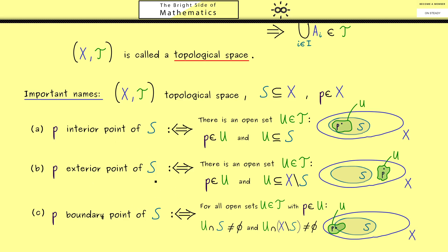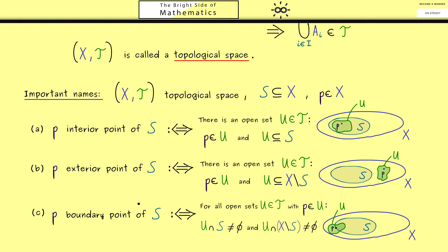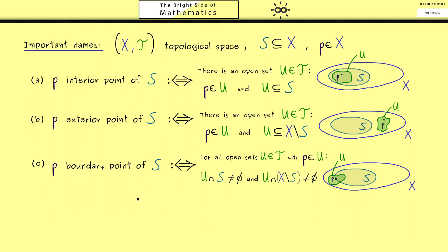Now you might think that we have all the names, but I still want to include a last one. Indeed, this one is often important when we want to deal with limits, and it's called accumulation point of the set S. And it simply means that the point p is not isolated from the rest of the set S.